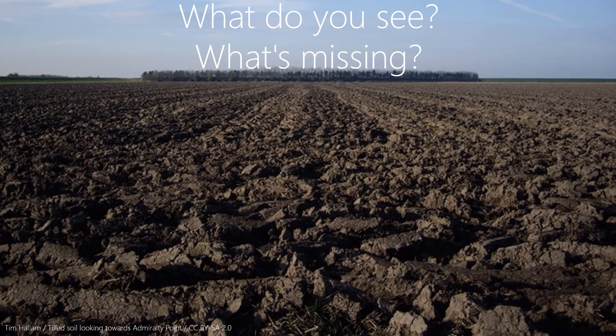Now for a little pop quiz on the principles. This is an example of what I see in a lot of the fields around where I live in Minnesota — and maybe around where you live too — from about October to May. Thinking about the principles, what do you see? What's missing? I see a lot of disturbance — this clumpy soil is a sign that the field has been tilled. I see a lot of bare soil with nothing covering the surface, so it's completely exposed to wind and rain. There are no living plants, so there's no food for the soil, and obviously there's no diversity or livestock. So none of the principles are here, and this is what a lot of fields look like for a lot of the year.